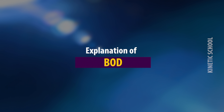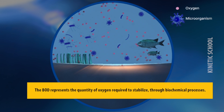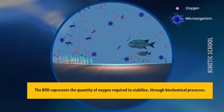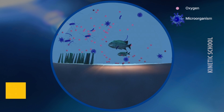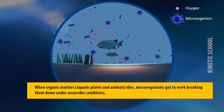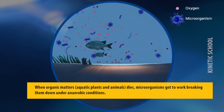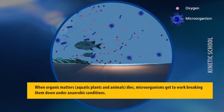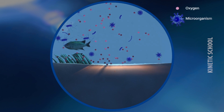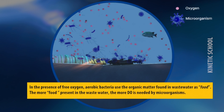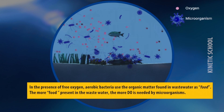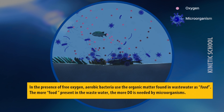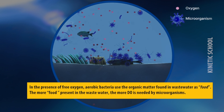Biological oxygen demand represents the quantity of oxygen required to stabilize organic matter through biochemical processes. When aquatic plants and animals die, microorganisms get to work in the water breaking them down under anaerobic conditions. In the presence of free oxygen, aerobic bacteria use the organic matter found in wastewater as food. The more food present in the wastewater, the more dissolved oxygen is needed by microorganisms.